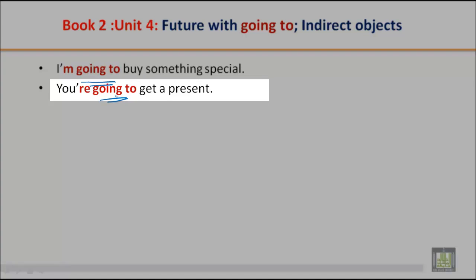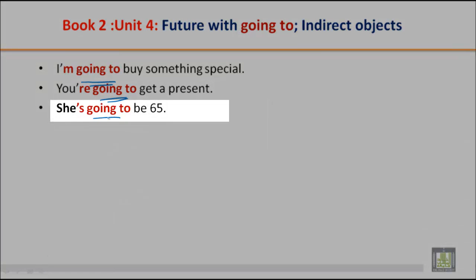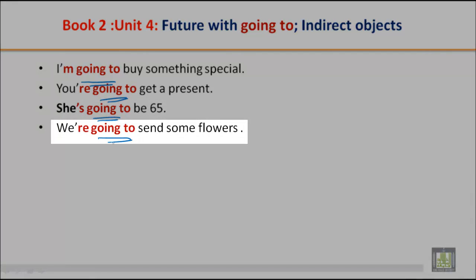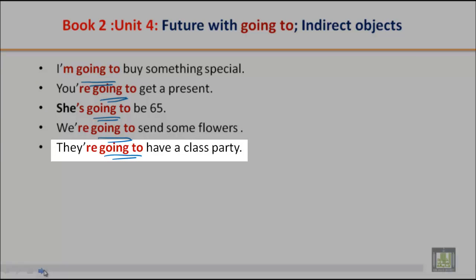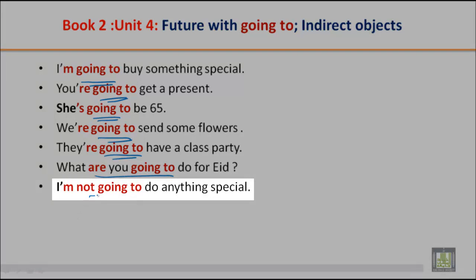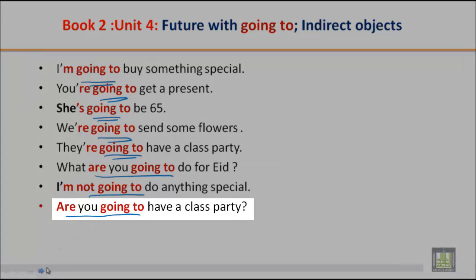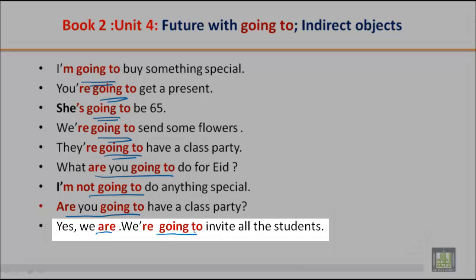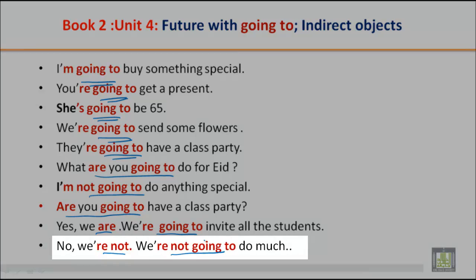You are going to get a present, maybe this week, next week, or at the end of this month. 'She is going to be 65' — maybe next month or next year. 'We are going to send some flowers.' 'They are going to have a class party.' 'What are you going to do for it?' 'I'm not going to do anything special.' 'Are you going to have a class party?' 'Yes, we are. We are going to invite all the students.' 'No, we are not going to do much.'